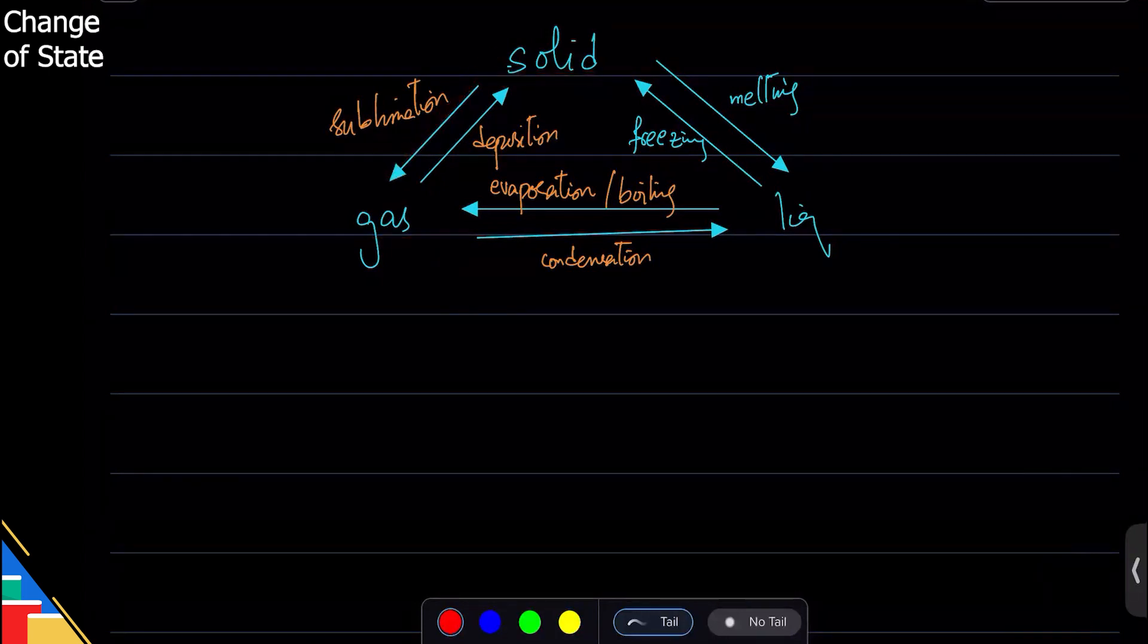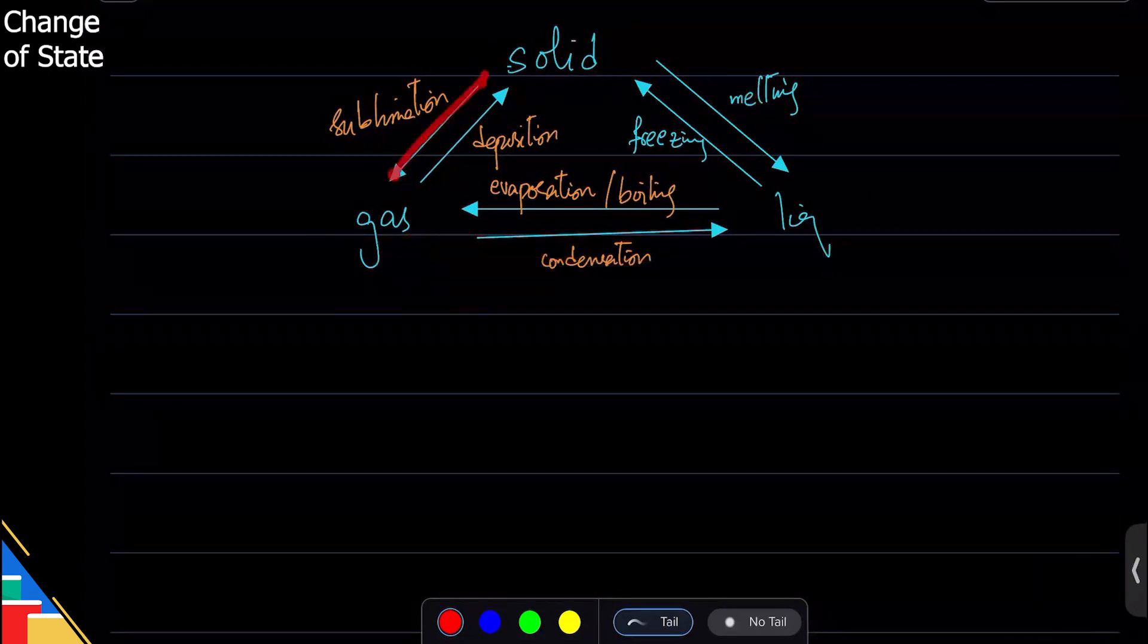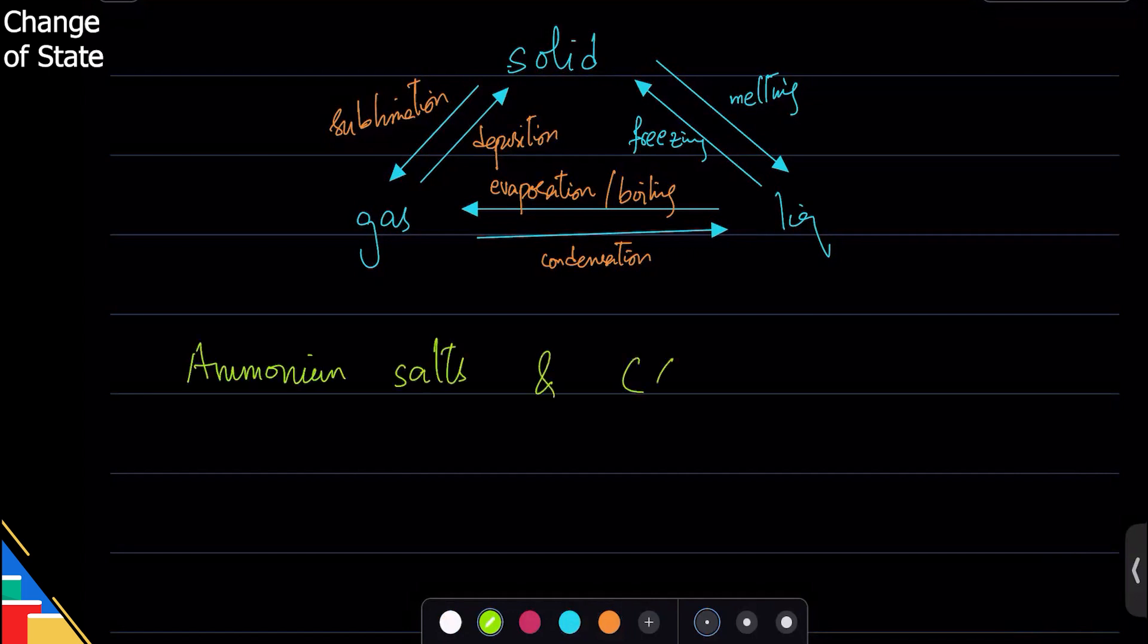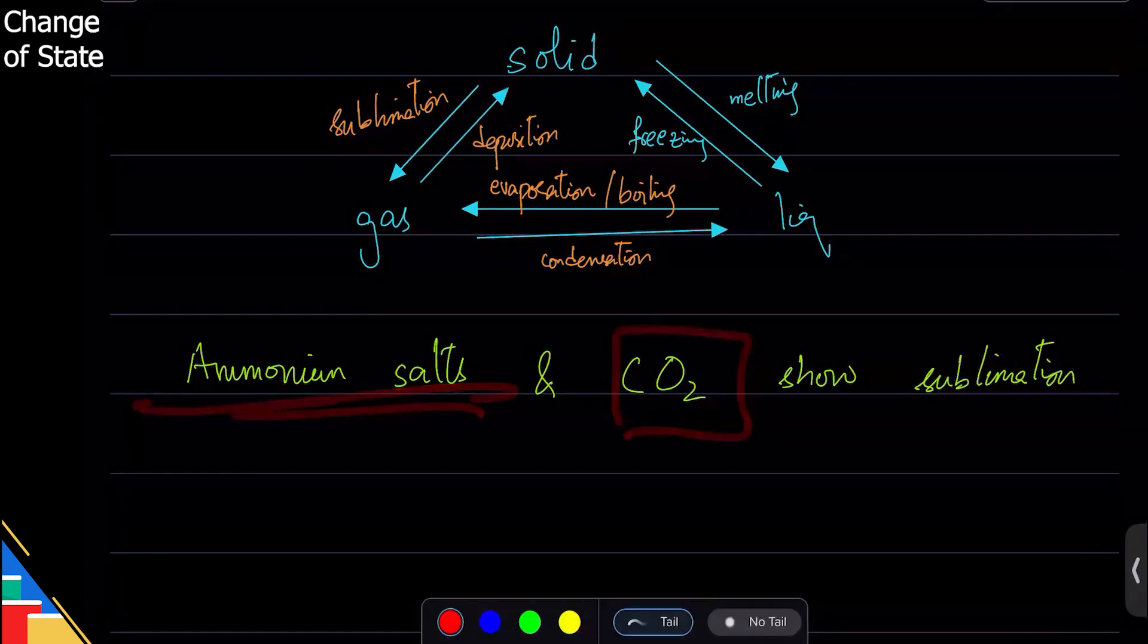That is what sublimation is. Solid can change to a gas through the long process, but that's not sublimation—it is when it goes directly. All ammonium salts and CO2 show sublimation. That is a fun fact you should know, at least about CO2.